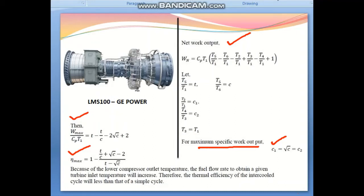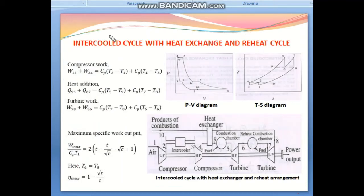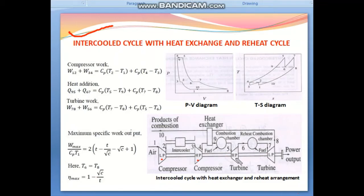Now let's consider the intercooled cycle with heat exchanger and reheat. The arrangement consists of a low-pressure compressor, a high-pressure compressor, an intercooler, a high-pressure turbine, a low-pressure turbine, a first combustion chamber, a reheat combustion chamber, a heat exchanger, and the intercooler.